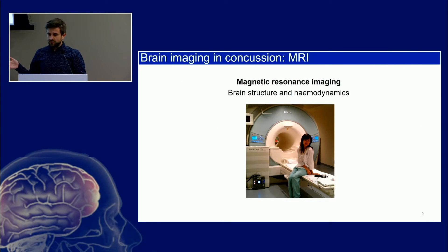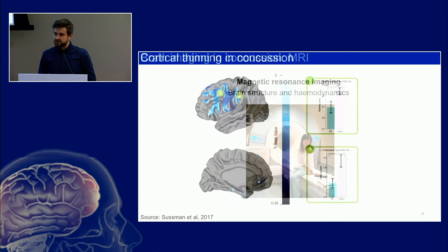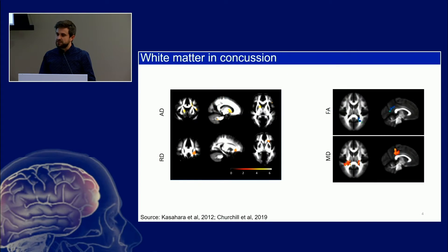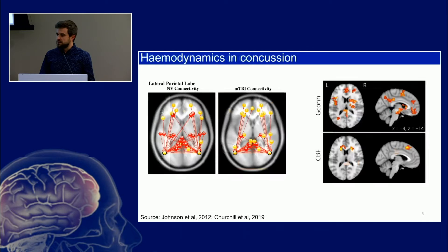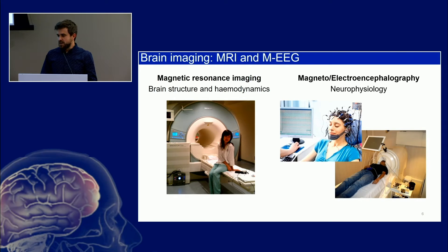In the previous talks, we've heard plenty of MRI. It's a fantastic imaging technique that tells us really detailed information about brain structure, the white matter connectivity, as well as indirect correlates of neural activity like hemodynamics. But one thing it does lack is the temporal sensitivity of neurophysiological techniques like EEG or MEG.